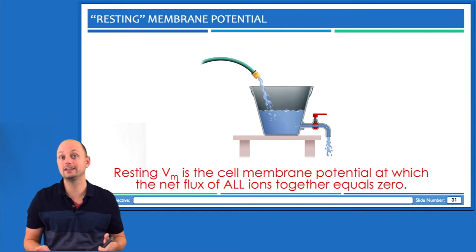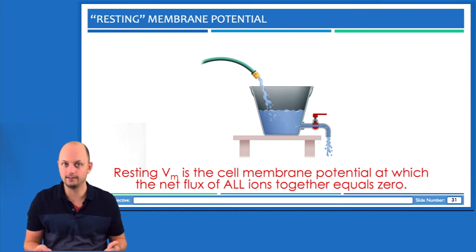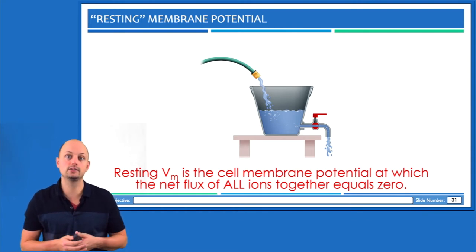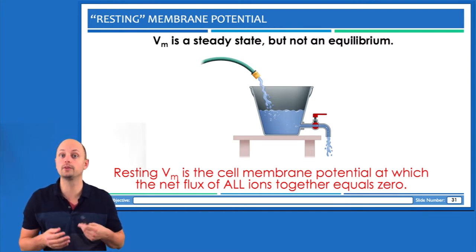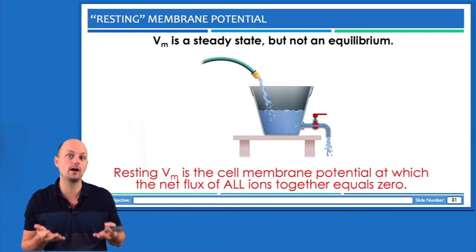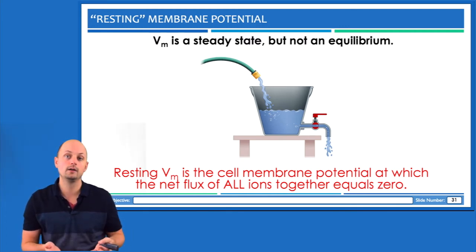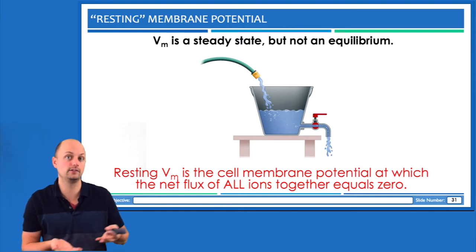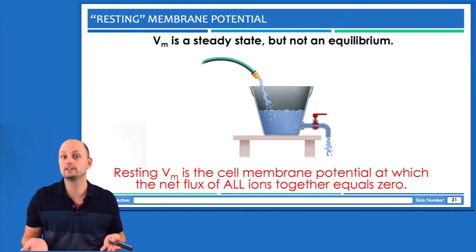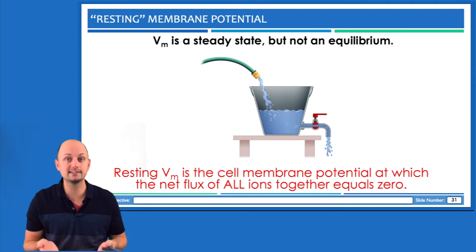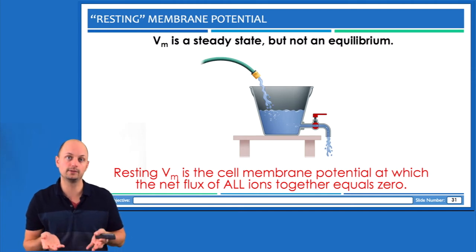So membrane potential is a steady state. It's the voltage that develops across the membrane from the movement of all permeable ions. Since those movements eventually become equal and opposite, the net flux is zero and the membrane potential reaches a steady state that we call resting membrane potential.